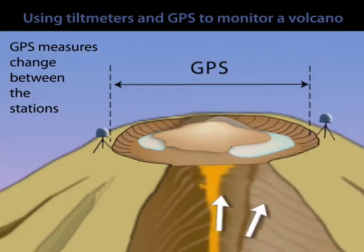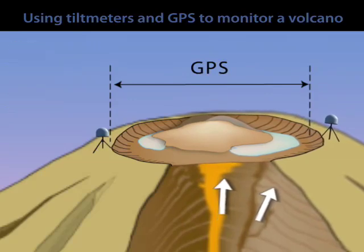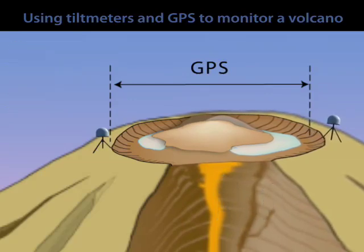As the ground deforms, the volcano changes its shape, those stations move, and that tells us something about what's going on beneath the surface.